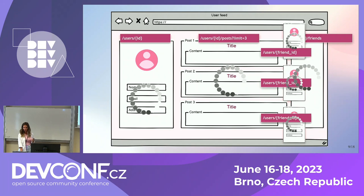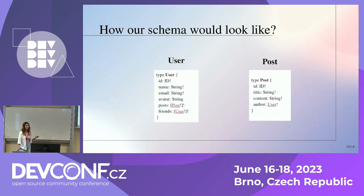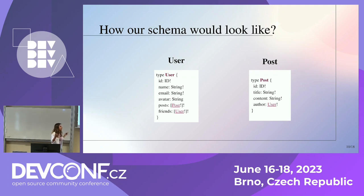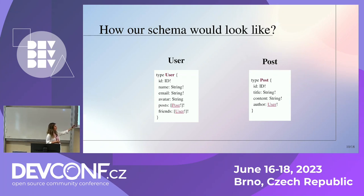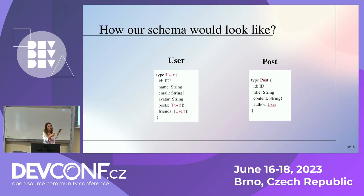Let's try to solve this with GraphQL. I'll start with my schema. I define the user with attributes: ID, name, email, and so on. I also define posts belonging to the user. A post is another object, and inside the post I define its attributes — including an author, which is itself a user. And inside the user I have a friends list, where each friend is also a user. This is how everything connects together.